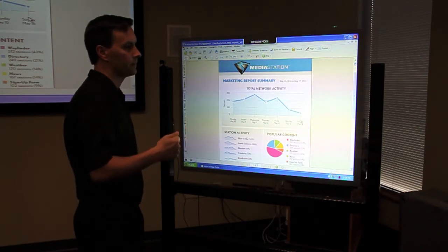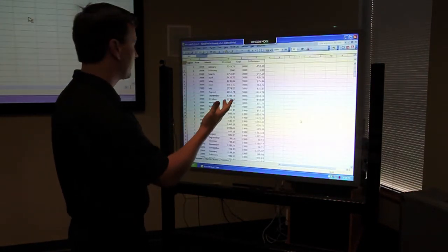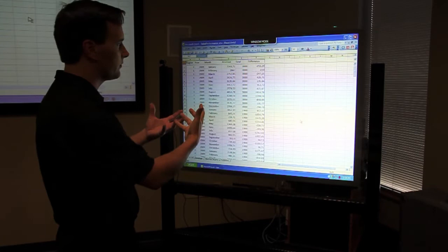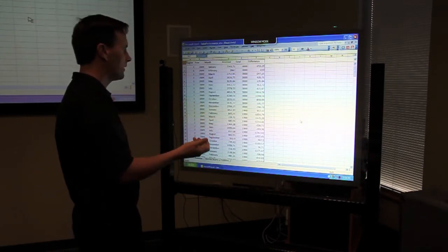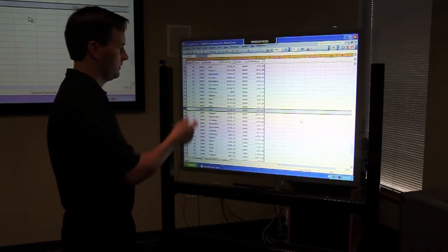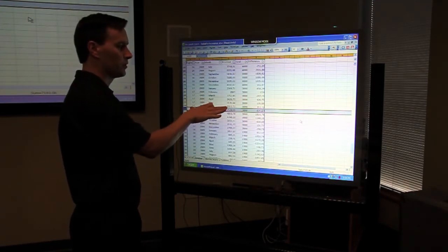Computer, open file. Here's an example of an Excel document, for instance. Now, we could give it certain voice commands to navigate through that document. Row 200. And so, you can see it just jumped to row 200.